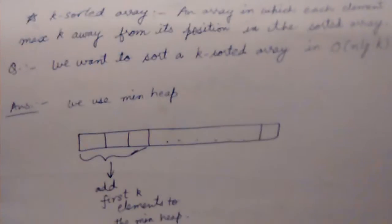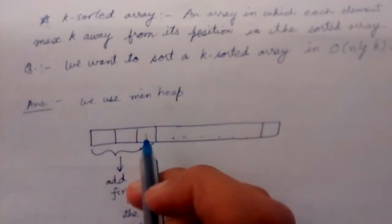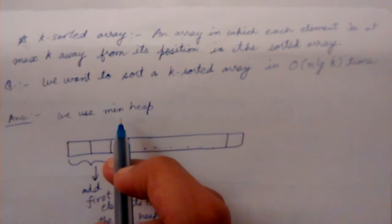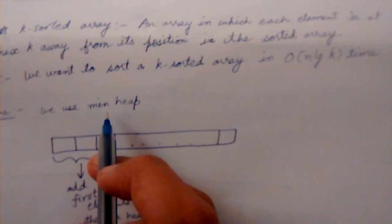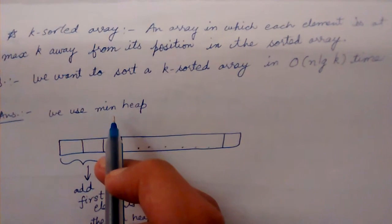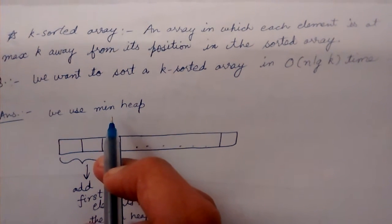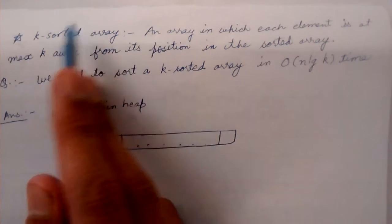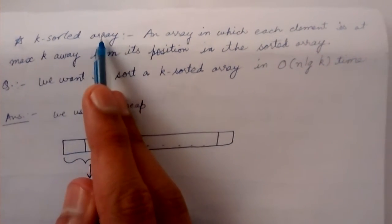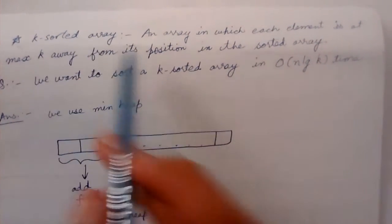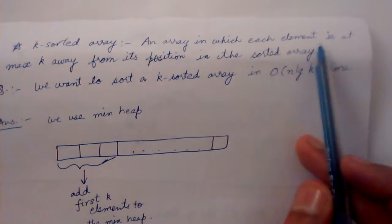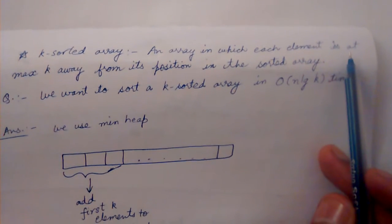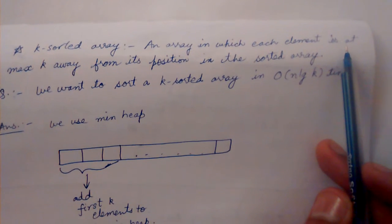Hello friends. Now that we have learned what a min heap is, we shall look at some of the applications of a min heap. The first application is to sort a k-sorted array. First of all, we will look at what a k-sorted array is: an array in which each element is at most k positions away from its position in the sorted array.